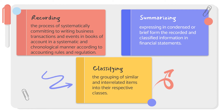The last one is summarizing — expressing in condensed or brief form the recorded and classified information in financial statements. After classifying each transaction or account, we can now summarize everything. In summarizing, our end form is the financial statements. From those financial statements, we can identify the financial position and financial performance of our business, which we can use for making economic decisions.